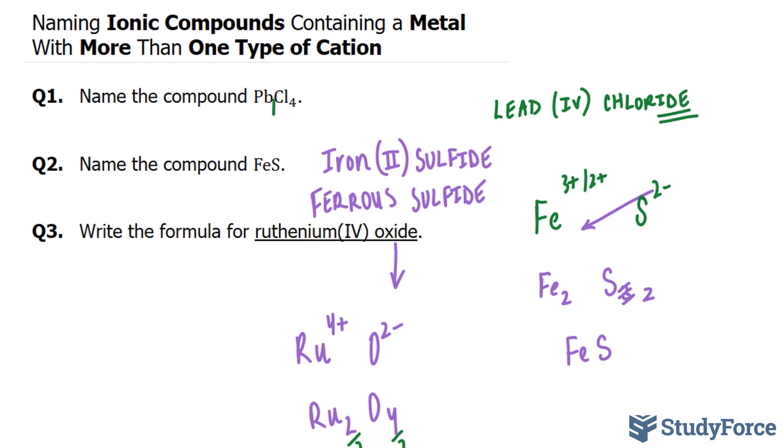Three examples on how to name ionic compounds containing a metal with more than one type of cation.